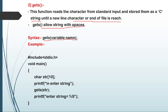Example of gets function: hash include stdio.h, void main, char str[10], printf("Enter string:"), gets(str) — here gets is used instead of scanf — then printf to display the string. This is the end of the gets example.